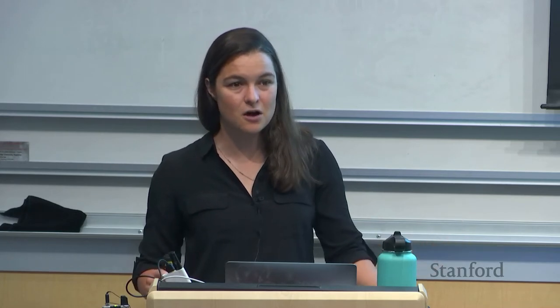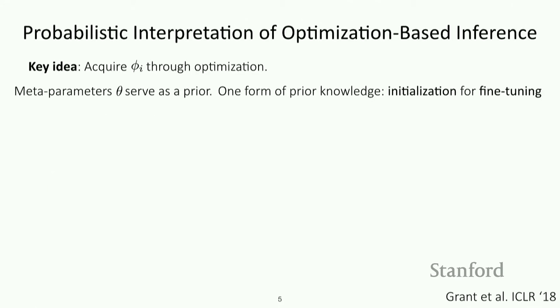Now I'd like to talk about some other properties of these kinds of algorithms and different ways we could extend the algorithm to address various challenges. One thing we talked about towards the beginning is how you can view meta-parameters theta as serving as a prior for task-specific adaptation, where this prior encapsulates the knowledge in your meta-training dataset.